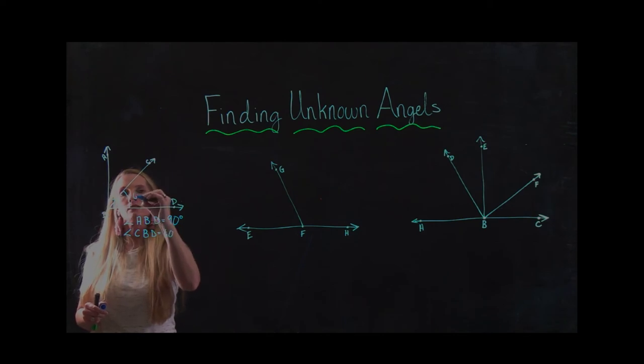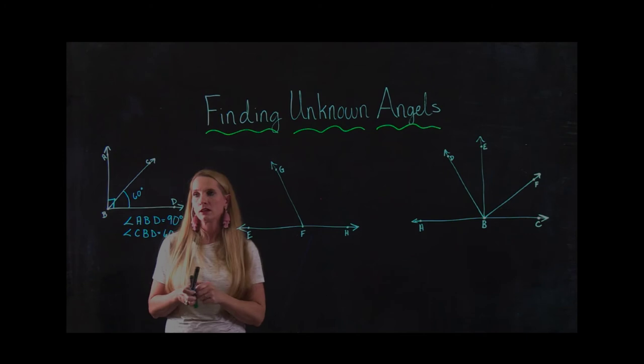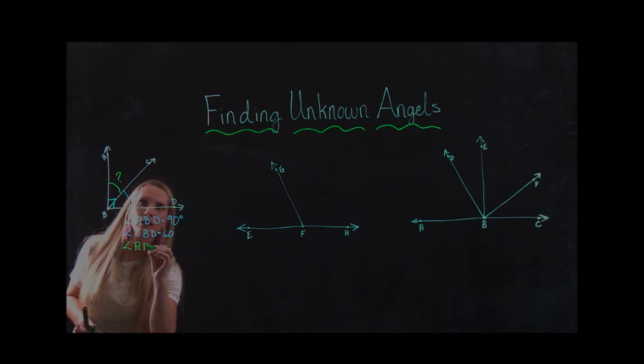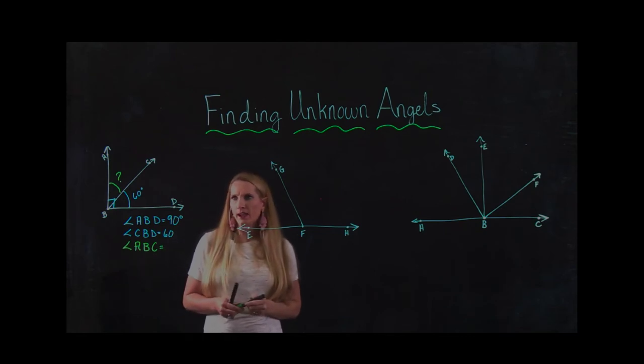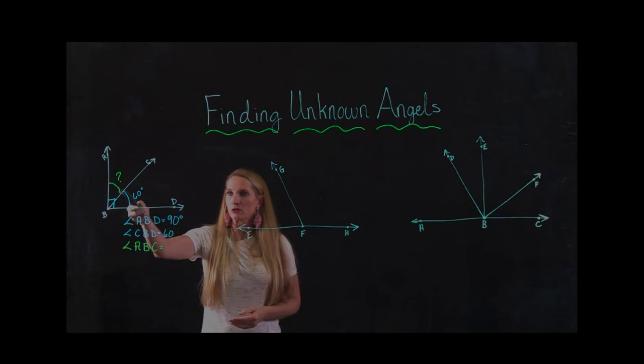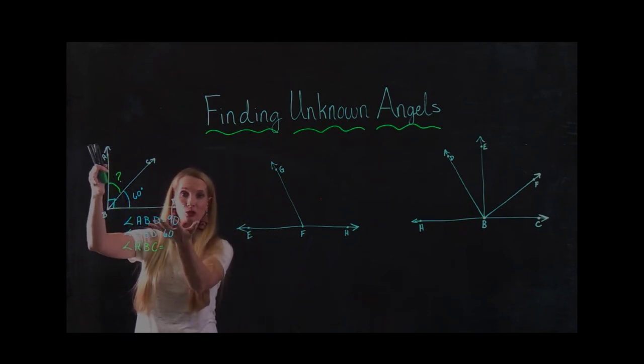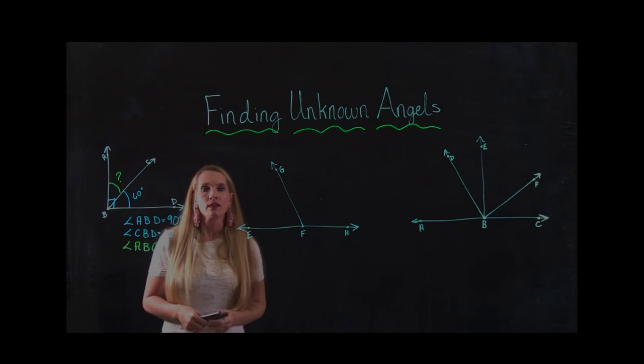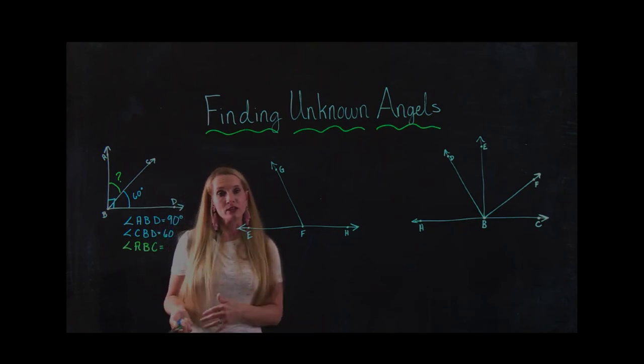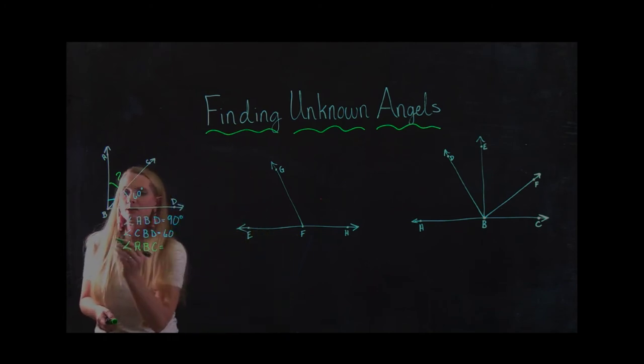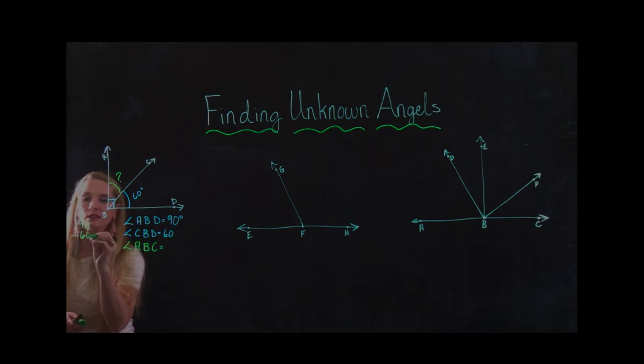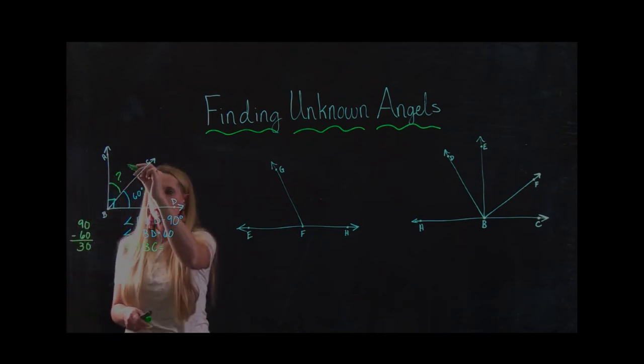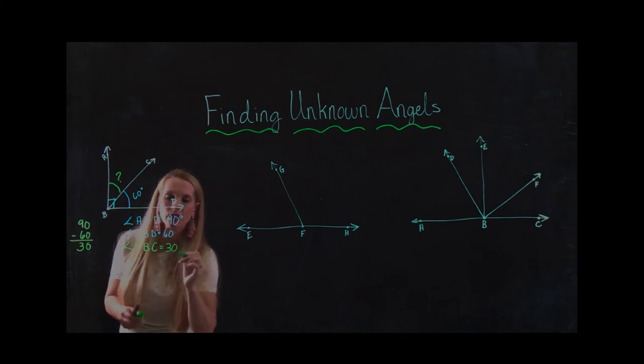So they gave me this is equal to 60 degrees. And they're asking me to find angle ABC. Now, looking at that, how do I go about finding that? Well, if we know that ABD is our big angle, and it equals 90 degrees, then if this little angle equals 60, I know that has to add to 60 to get 90. So I'm going to do the inverse property. I'm going to say 90 minus 60, most of you can do it in your head. 0 minus 0 is 0, 9 minus 6 is 3.